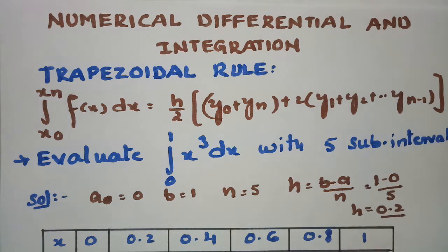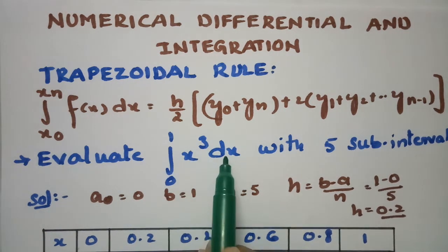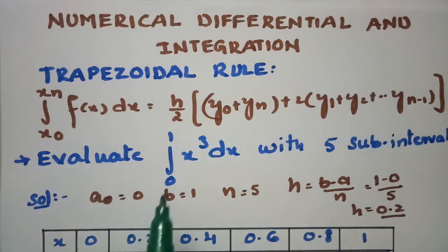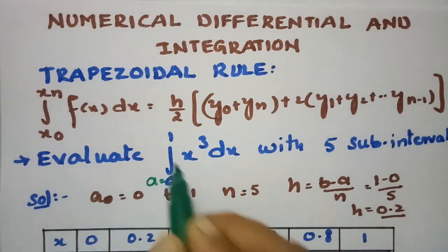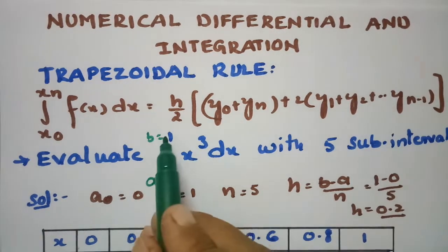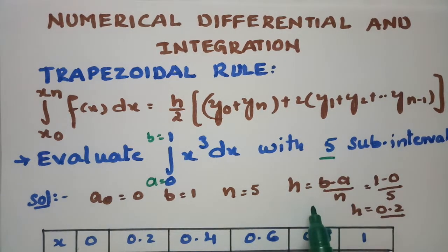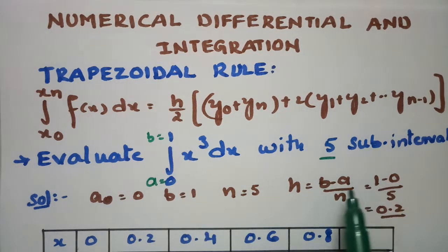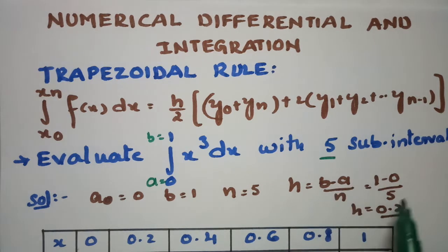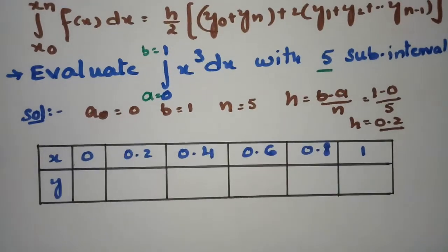Using this formula, I am going to evaluate the integral from 0 to 1 of x³ dx with 5 subintervals. Here a is equal to 0 and b is equal to 1, and n is equal to 5. So h is equal to b minus a by n, which is 1 minus 0 divided by 5, giving h equal to 0.2. We need these values to proceed.